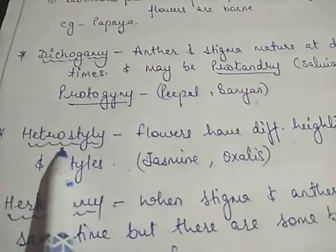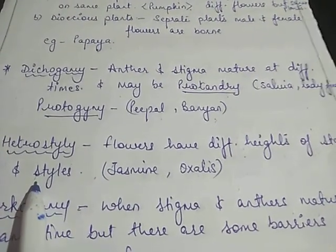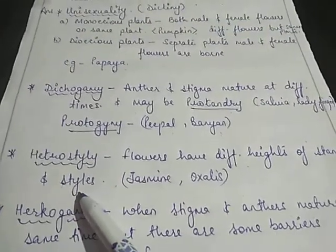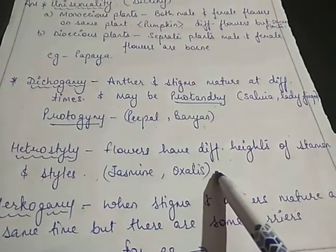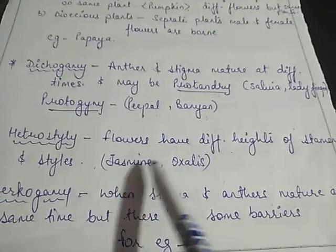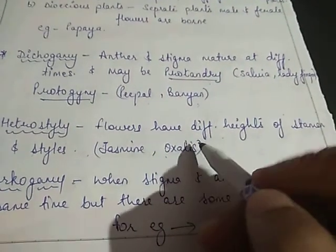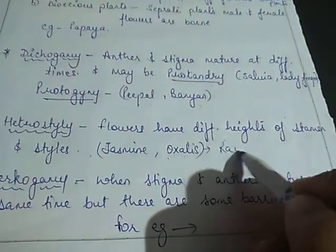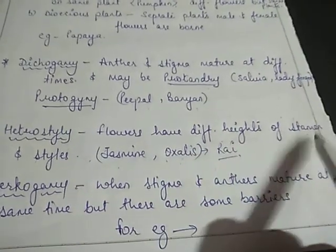Next comes heterostyly. Heterostyly means flowers have different heights of stamen and styles. When a flower has a different height of stamen and a different height of style, self-pollination may be easily avoided because for self-pollination the heights of stamen and style should be the same. Examples are jasmine and Oxalis.